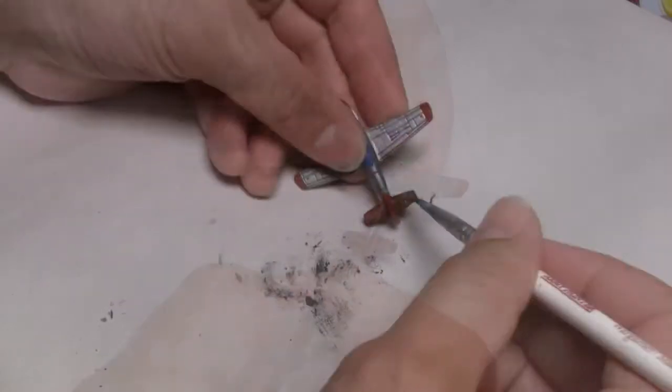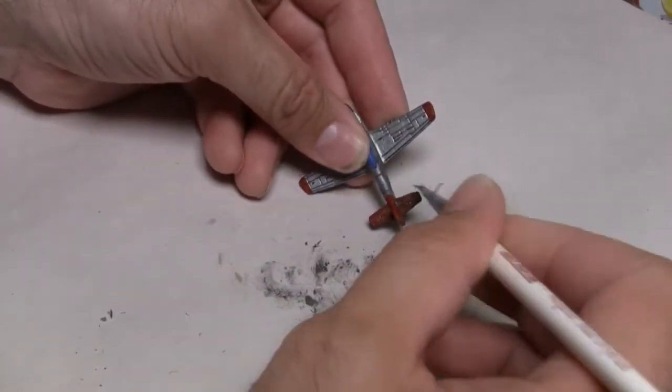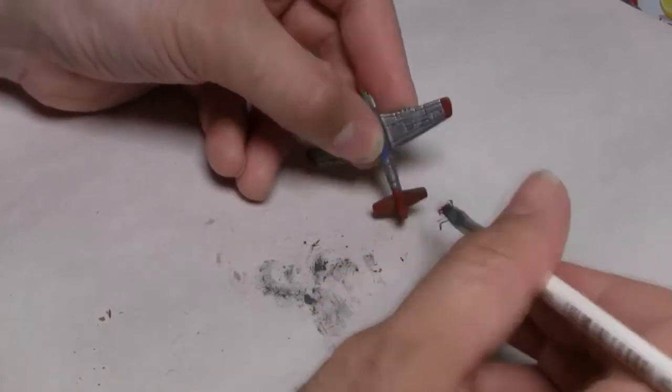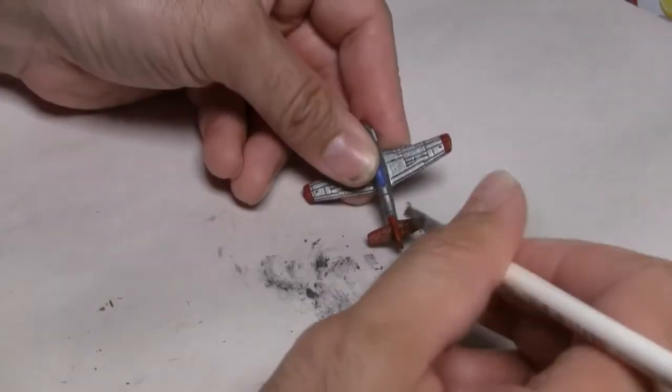So repeat the process you just did and cover up all those brown areas with the Mephiston Red. In some parts, if it is easier, use your dry brush and apply the paint that way.